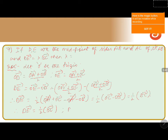We compare this with the given expression: DE vector equals lambda into BC vector. By comparing, we can say that in the place of lambda we have 1 by 2. Therefore the value of lambda is equals to 1 by 2.